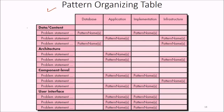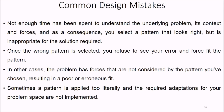The pattern organizing table covers categories of data content, architecture, component level, and user interface — examining database, application, implementation, and infrastructure concepts to determine whether a pattern exists for a given problem statement. Common design mistakes include: not spending enough time understanding the underlying problem, its context and forces, resulting in selecting a pattern that looks right but is inappropriate; once the wrong pattern is selected, refusing to see the error or force-fitting the pattern; the problem having forces not considered by the chosen pattern, resulting in a poor or erroneous fit; and applying a pattern too literally without implementing required adaptations for your problem space.